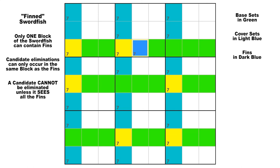This extra candidate is called a fin. Let's look at the two cases or outcomes that are possible by considering first that the fin is false and then considering that the fin is true. These are the only two possibilities for the fin, as is the case for any candidate in the entire puzzle. It is either true or false.